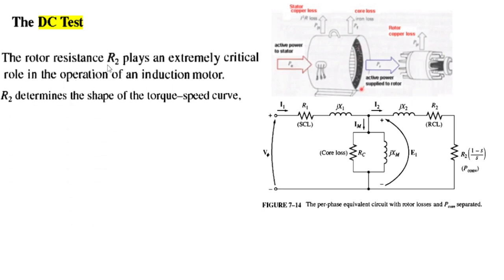The rotor resistance R2 plays an extremely critical role in the operation of an induction motor. R2 determines the shape of the torque-speed curve, so it is very important. There is no direct method to measure it.